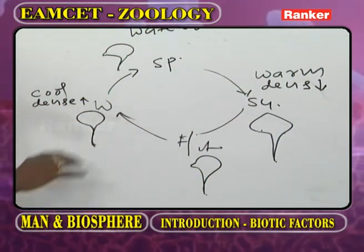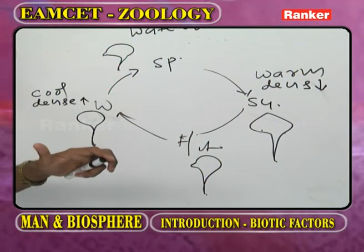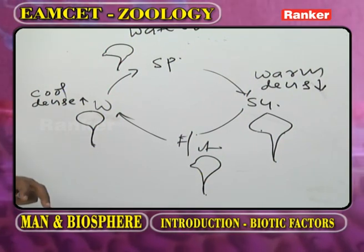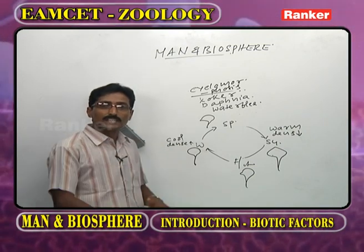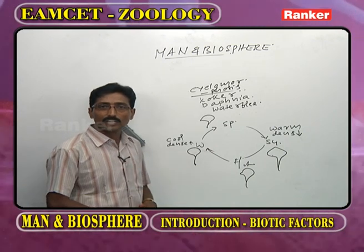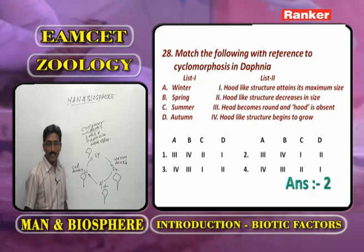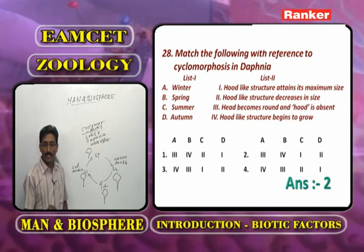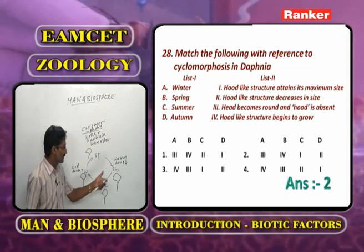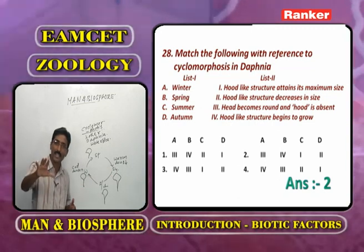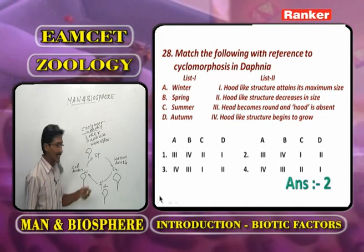As Daphnia undergoes seasonal morphological changes, the surface area increases, allowing it to float freely on the water surface. The significance of cyclomorphosis is free floating (buoyancy). Based on this information about winter (round head), spring (small projection), summer (helmet-like projection), and fall (decreasing size), the correct answer is the second option.